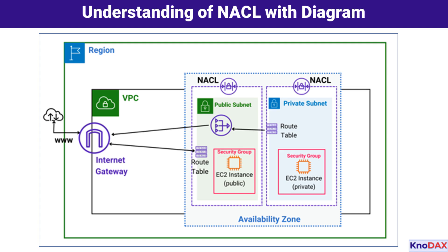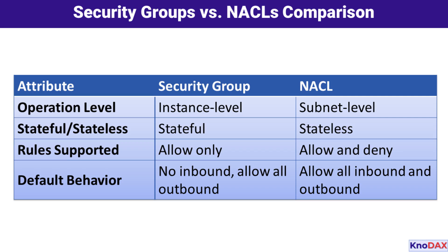To summarize: NACLs provide an optional layer of security for your VPC. They work at the subnet level and are stateless. Use NACLs to complement security groups for comprehensive traffic control in your AWS environment.